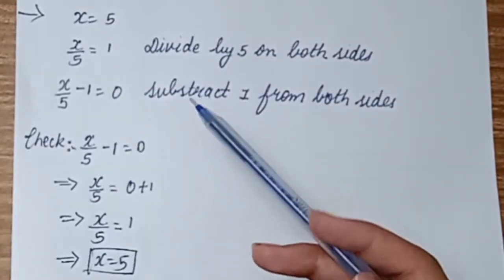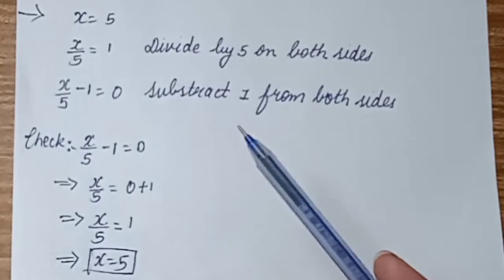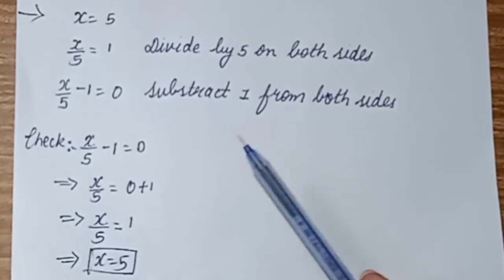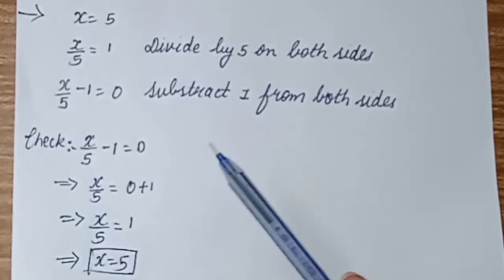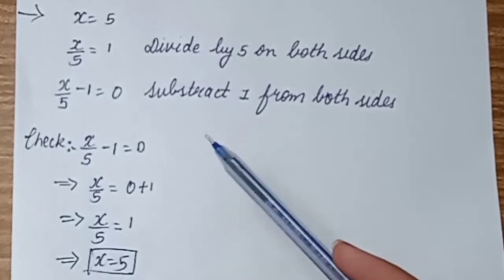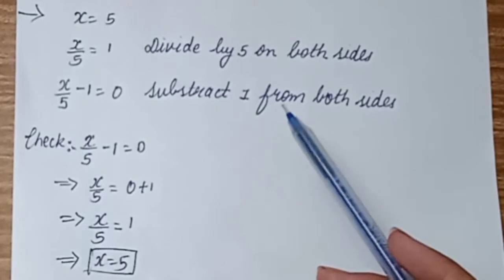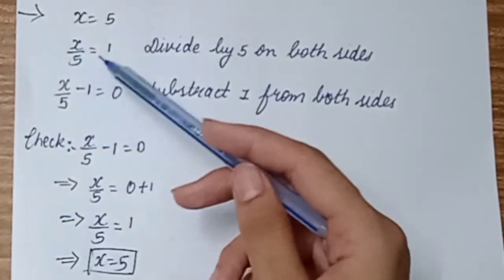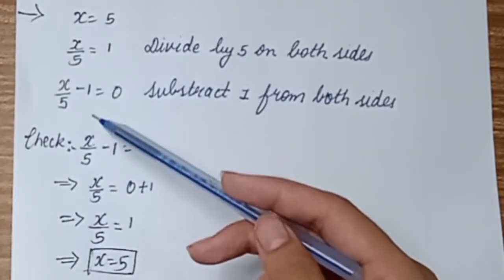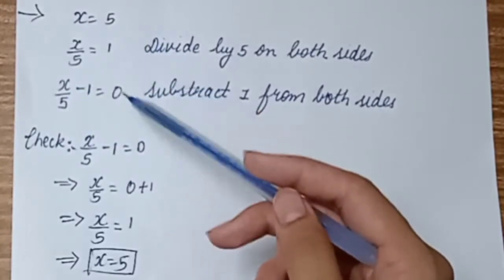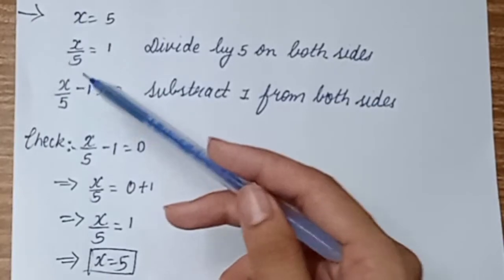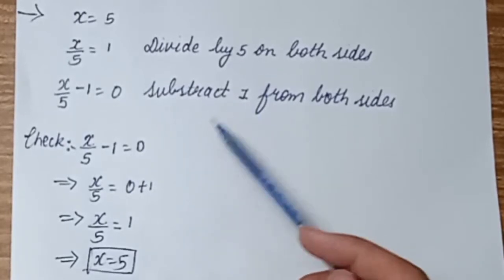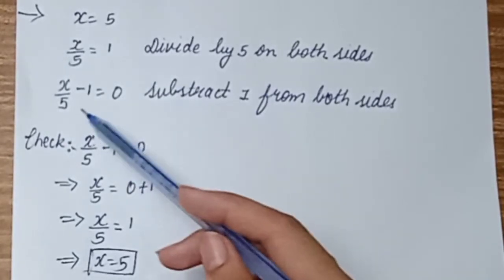We can do any operation — multiply by a random number, add, or subtract — as long as we apply it to both sides, both left-hand side and right-hand side. Here, we subtract 1 from both sides. So left-hand side becomes x upon 5 minus 1, and right-hand side becomes 1 minus 1 which is 0. So our final equation is x upon 5 minus 1 is equal to 0.